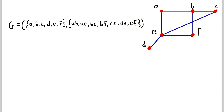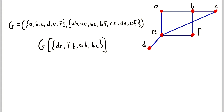Let's look at one more example — starting with the notation and then moving to a drawing. So let's look at the subgraph of G induced by the edge set containing DE, FB, AB, and BC. To drive home the point, let's draw the edges first: we draw edge DE, then edge FB, then edge AB, and then edge BC. So now we have all of our edges.